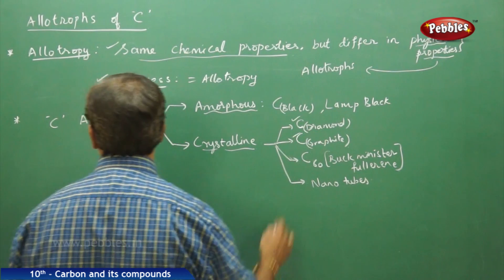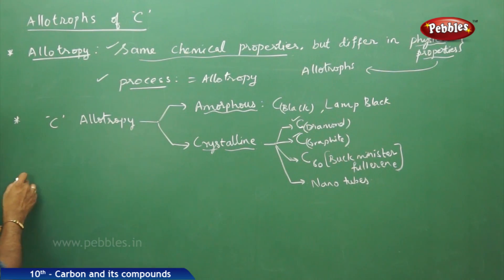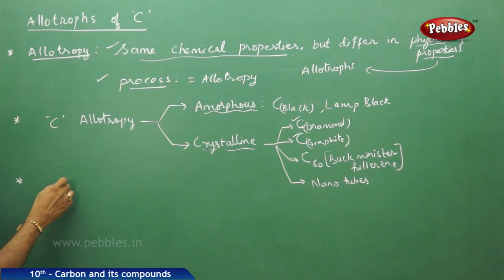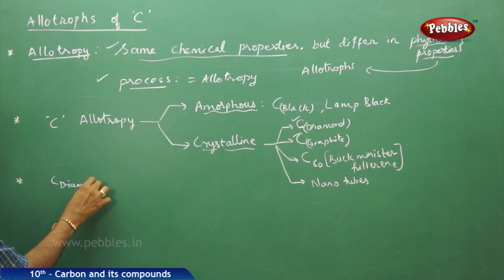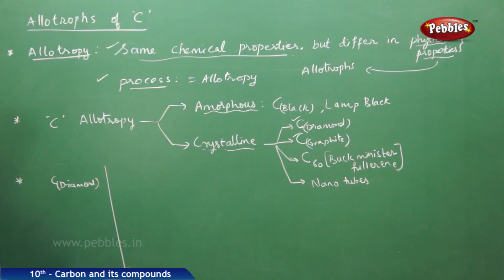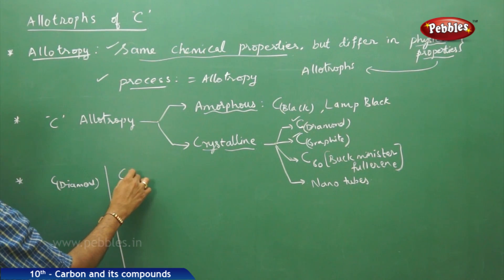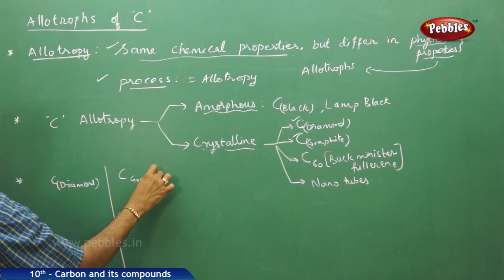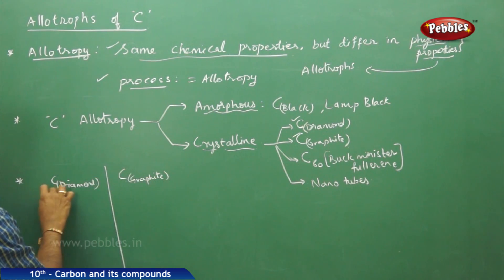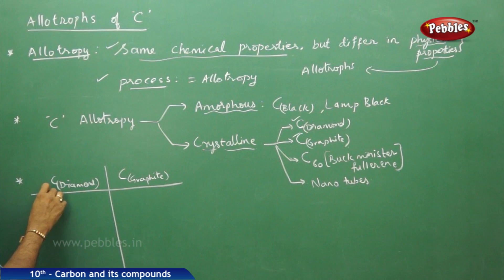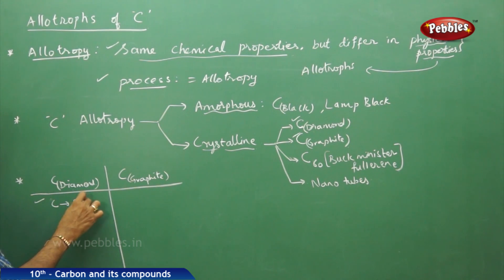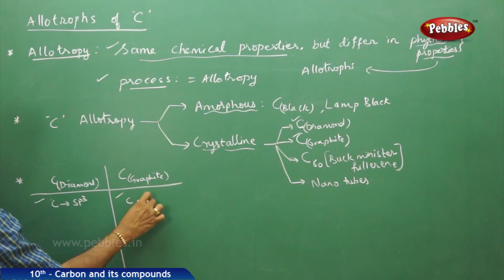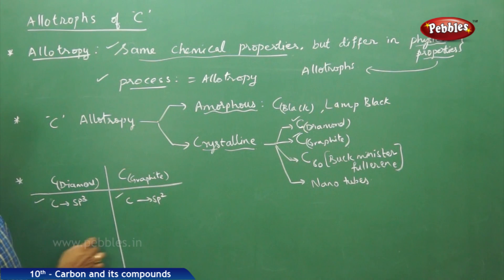In particular, diamond and graphite are very very important. In diamond, each carbon undergoes sp3 hybridization. In graphite, carbon has sp2 hybridization.